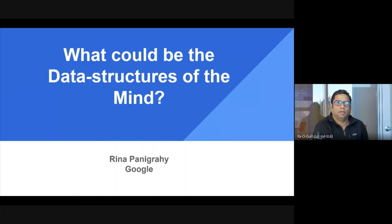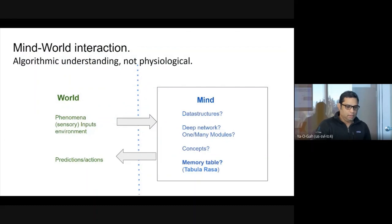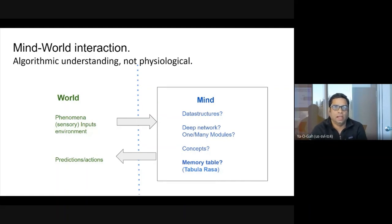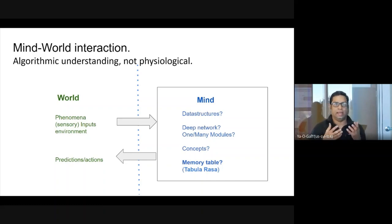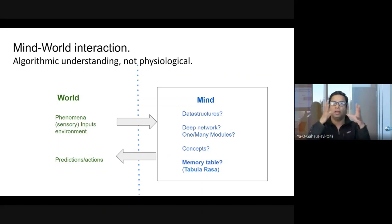Thanks everyone for coming. I'll be talking about what are the right abstractions for understanding the mind as an algorithmic engine. Feel free to interrupt me with questions at any time. How the mind interacts with the world is a deeply fundamental question — the world throws sights and sounds at us and we have to make sense of it, make predictions, and decide what actions to take.